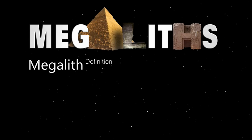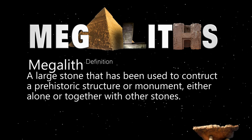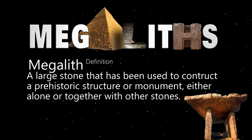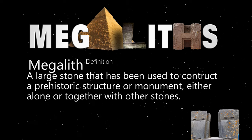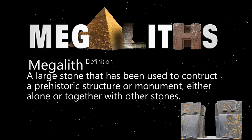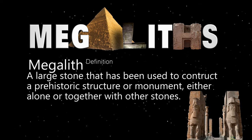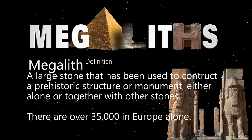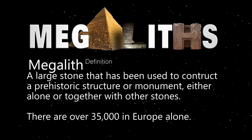A megalith is a large stone that has been used to construct a prehistoric structure or monument, either alone or together with other stones. There are over 35,000 megaliths in Europe alone.